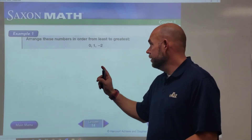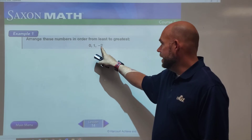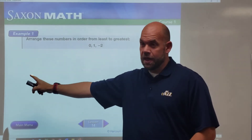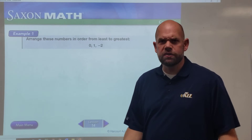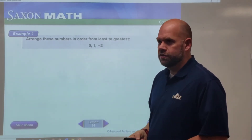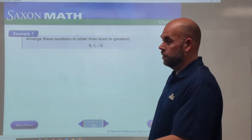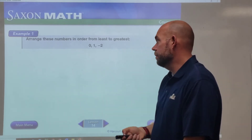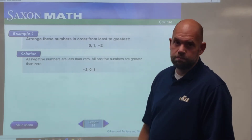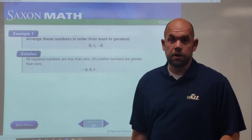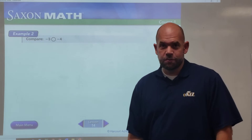Let's arrange some numbers. If we think on a number line, zero is in the middle, negative numbers are to the left, and positive numbers are to the right. This one is easy to arrange because zero is our middle number, the negative number goes first, and the positive number goes last. So we take negative two, zero, and one — not too tricky so far.